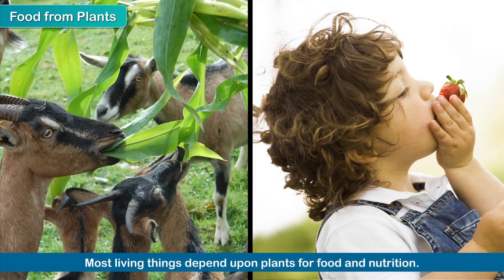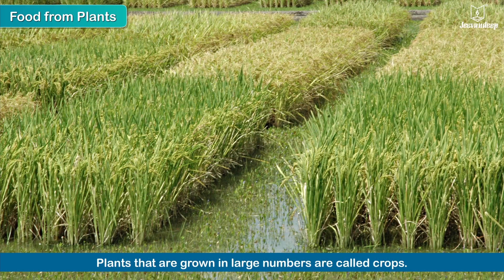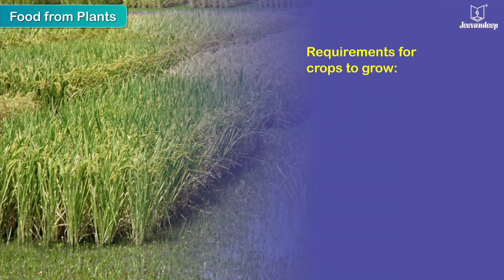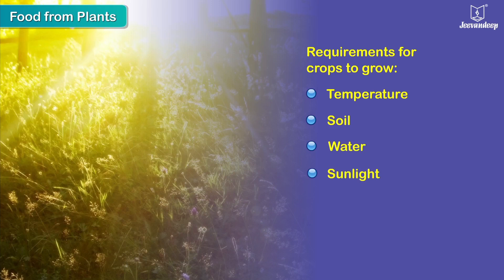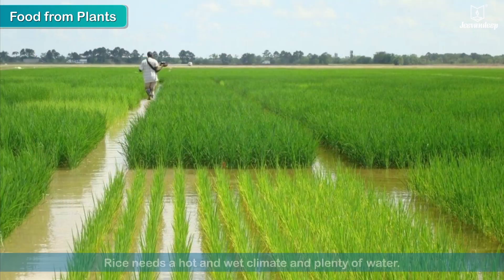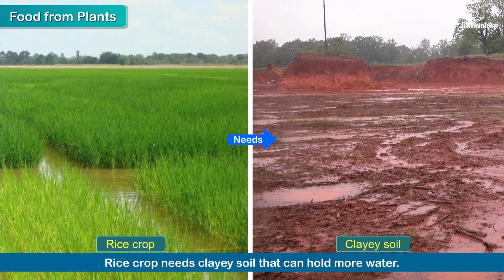Most living things depend upon plants for food and nutrition. Plants that are grown in large numbers are called crops. Crops have typical needs in terms of temperature, soil, water, sunlight, etc., and are thus cultivated accordingly. Rice needs a hot and wet climate and plenty of water, and it is grown in the rainy season.